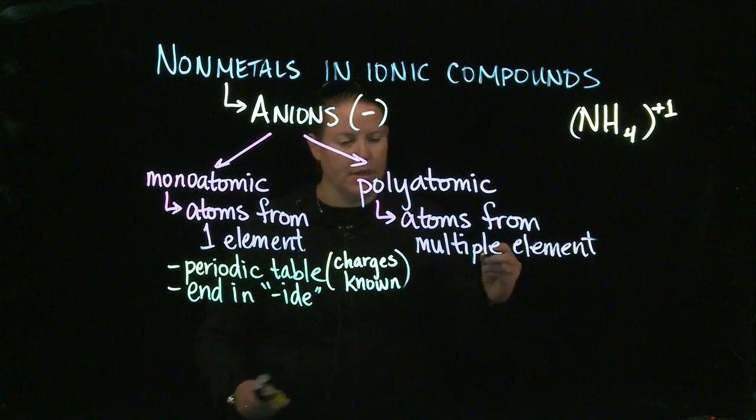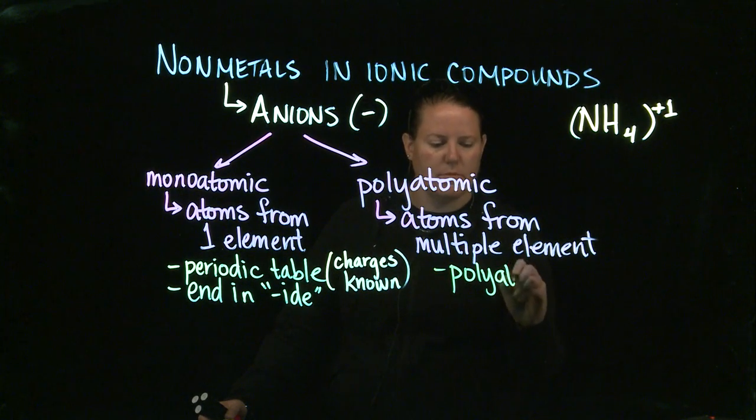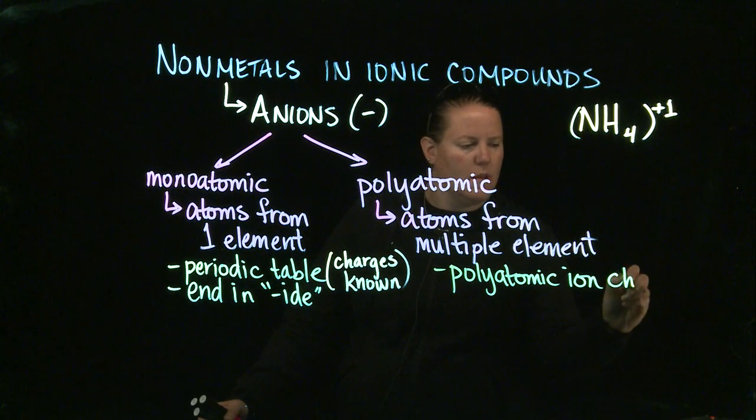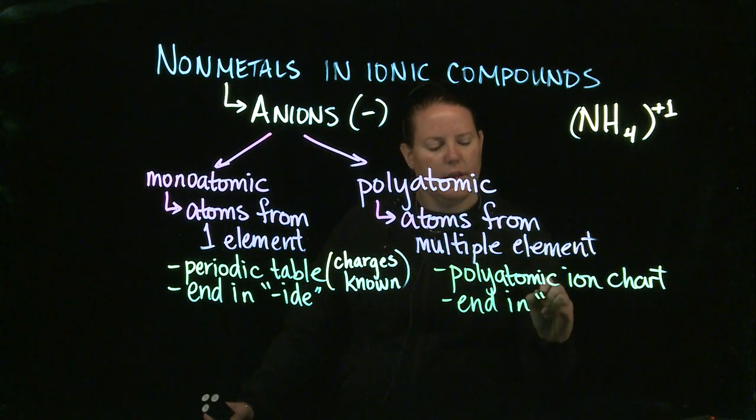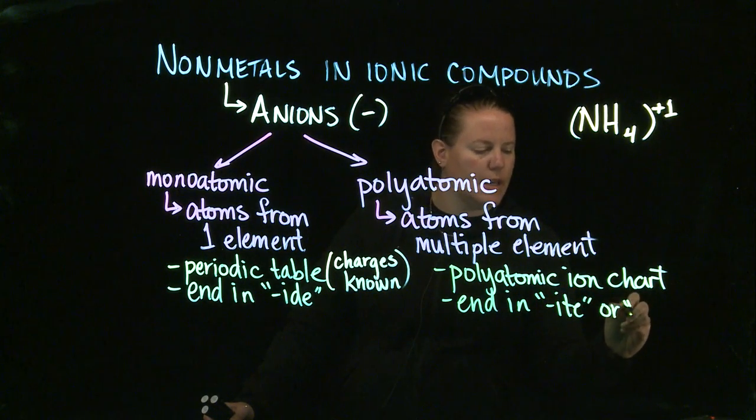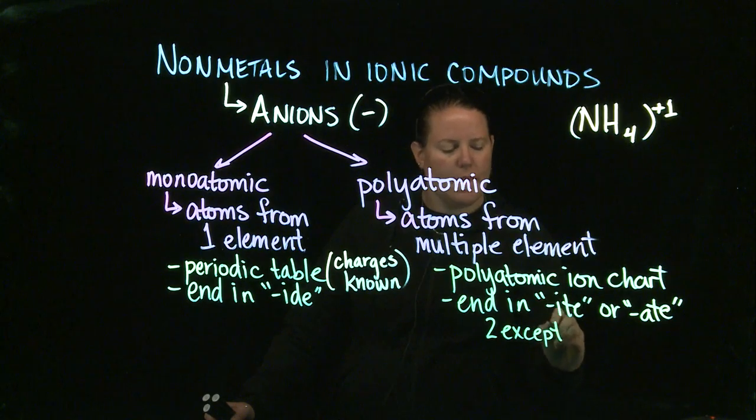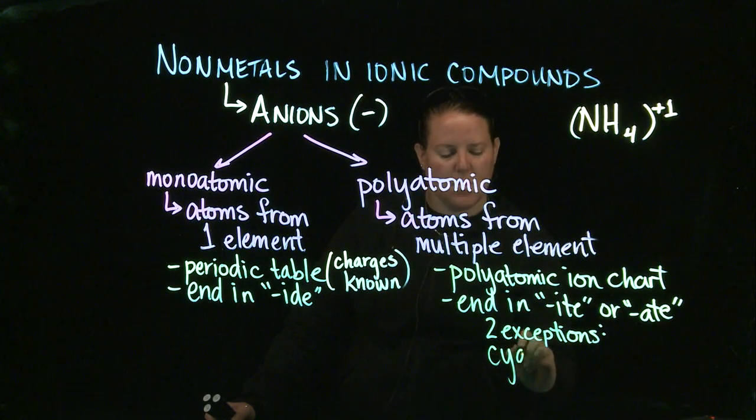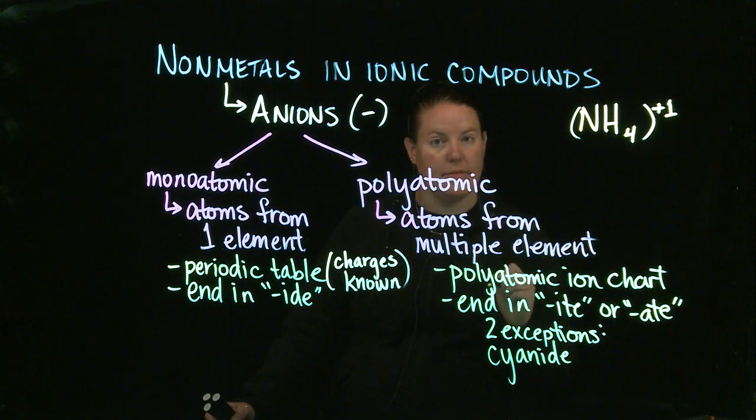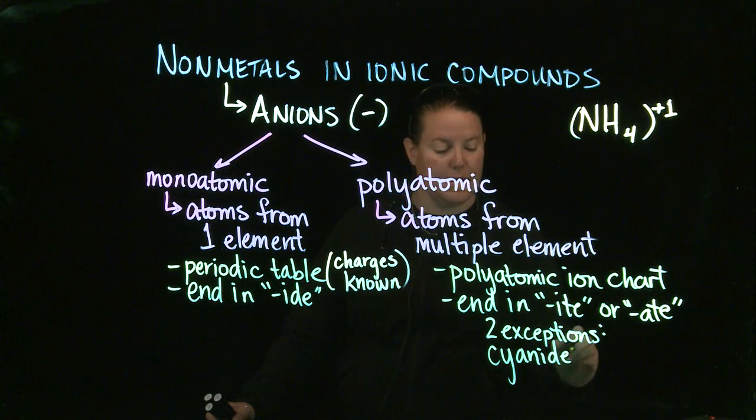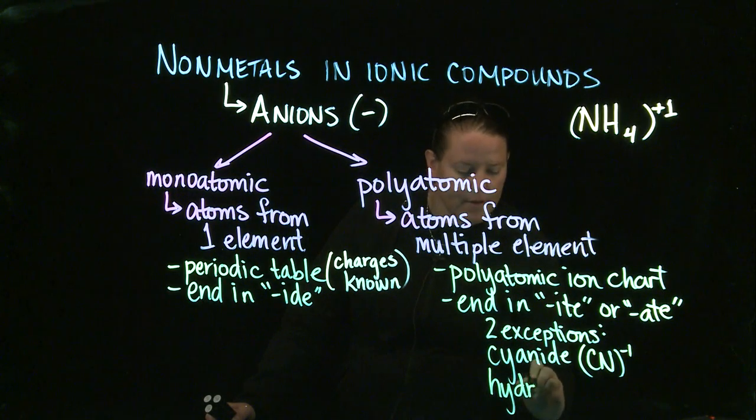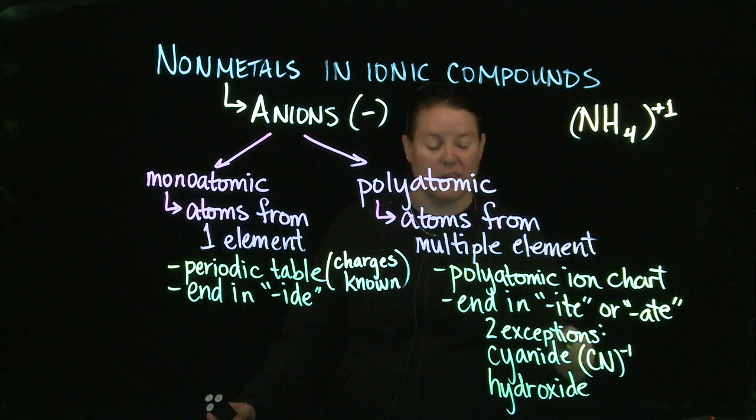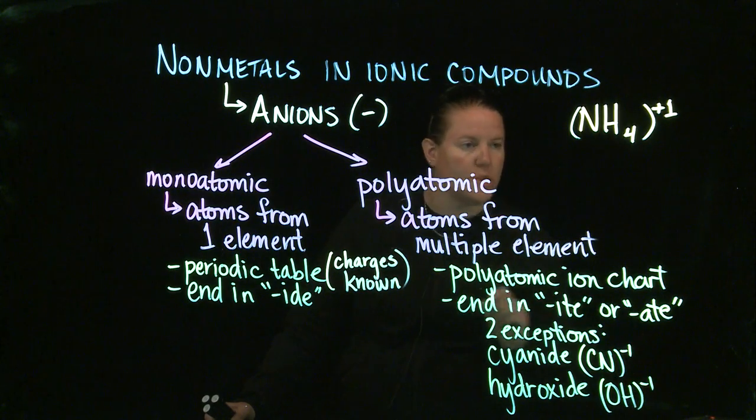In terms of polyatomic ions, polyatomic ions are found on the polyatomic ion chart, which is fabulous that we have a chart that lists all these out. They tend to end in ITE or ATE with two exceptions. The two exceptions you have to be aware of are cyanide, that ends in IDE. You look through the entire periodic table for something that begins with cyan, you're not going to find it. Cyanide is CN with a minus 1. And hydroxide, again, you look through the entire periodic table for something that begins with hydrox, there's nothing there. Which means it's on the polyatomic ion chart.